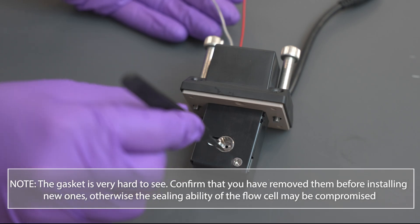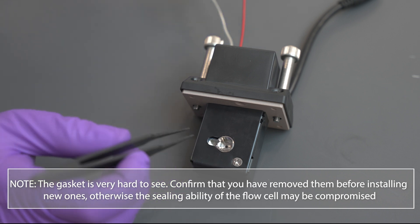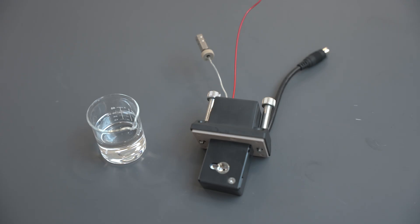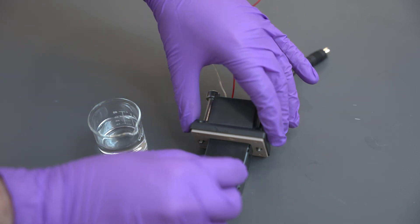The gasket is very hard to see. Confirm that you have removed them before installing new ones, otherwise the sealing ability of the flow cell may be compromised. Take a piece of wiping paper soaked in 2-propanol and wipe the inside of the flow cell where the lens and gasket sat.